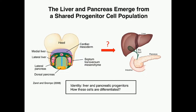Previous studies show that the liver and the pancreas emerge from a shared progenitor cell population. Looking at this figure of an embryonic stage 8.5 mouse embryo, the liver and ventral pancreas originate from this common progenitor cell population. However, due to the size and location of this progenitor cell population, it was extremely difficult to identify a single bipotential progenitor cell and understand how it can be differentiated.